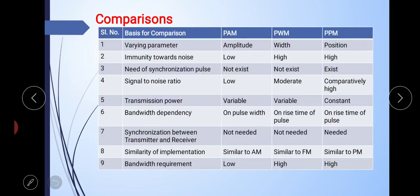Now let's compare PAM, PWM, and PPM. The first point is the varying parameter: in PAM, the amplitude of the pulses varies; in PWM, the width of the pulses changes; and in PPM, the position of the pulses changes. Regarding immunity towards noise, PAM shows low immunity towards noise, whereas PWM and PPM have higher noise immunity with a lower noise interference factor.